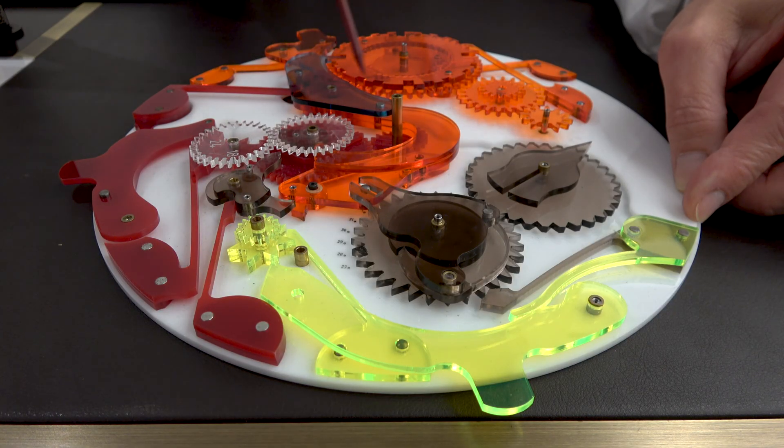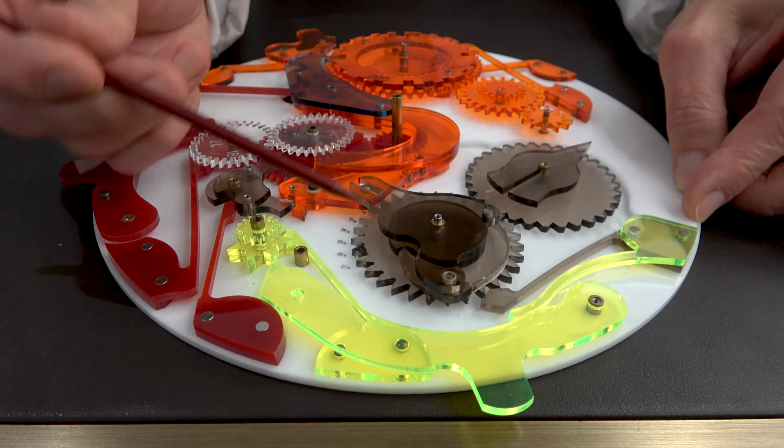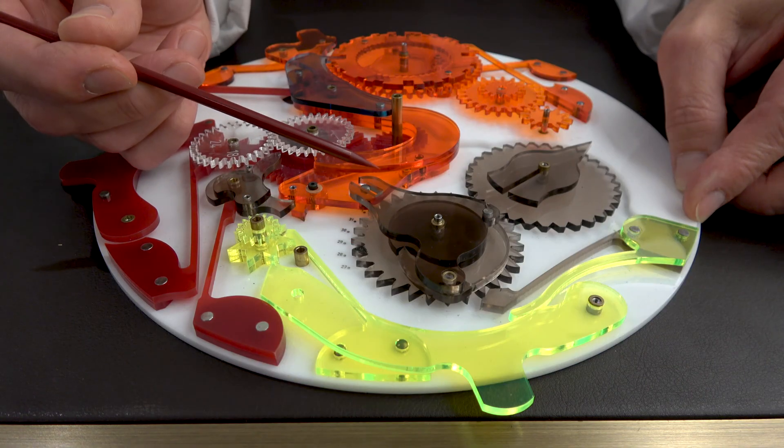So the next time the great lever moves, it will be this click that will push the snail, thus driving the star of 31 forward to the next month.